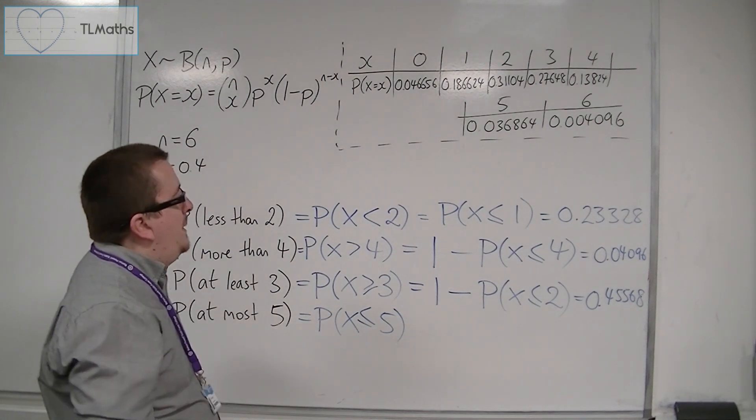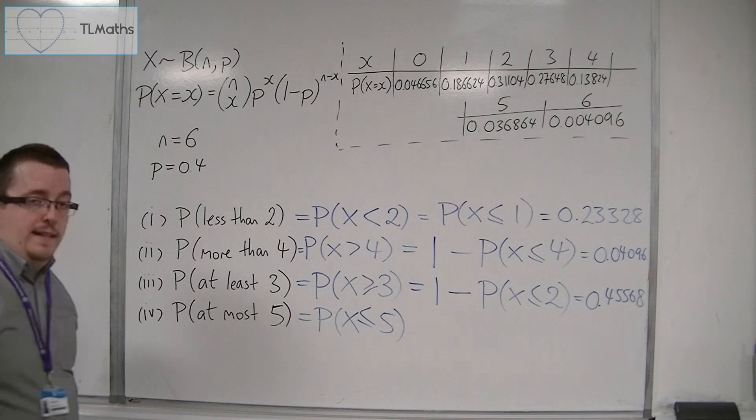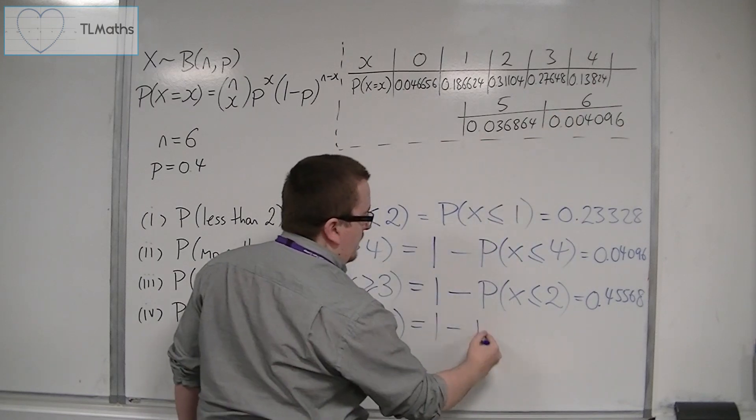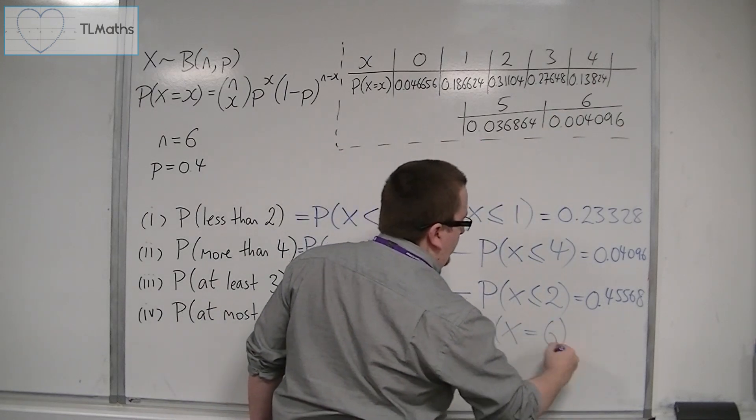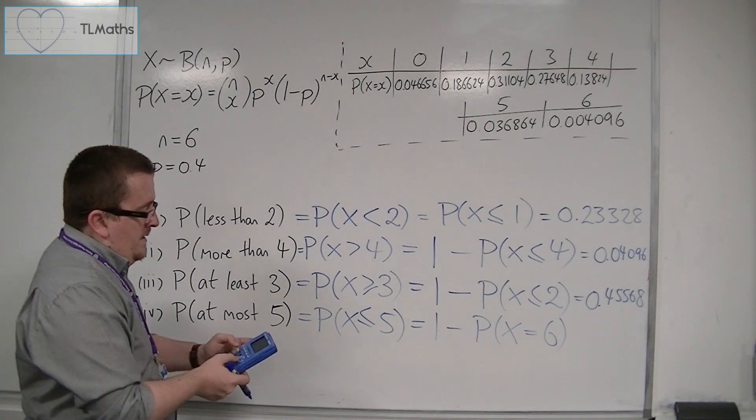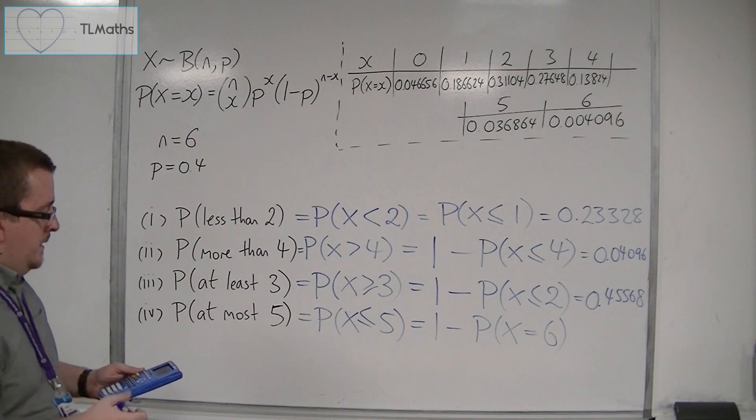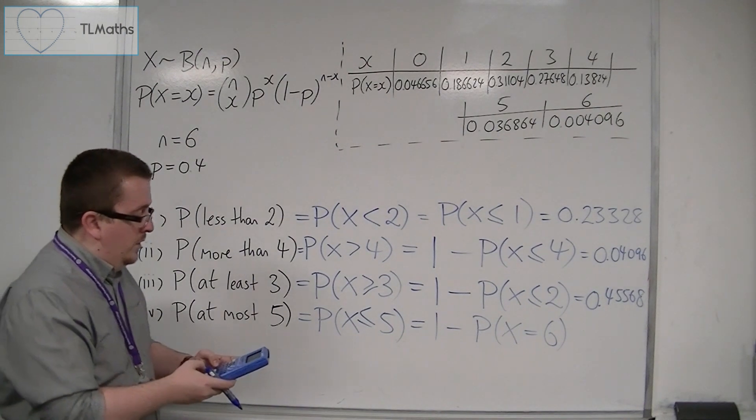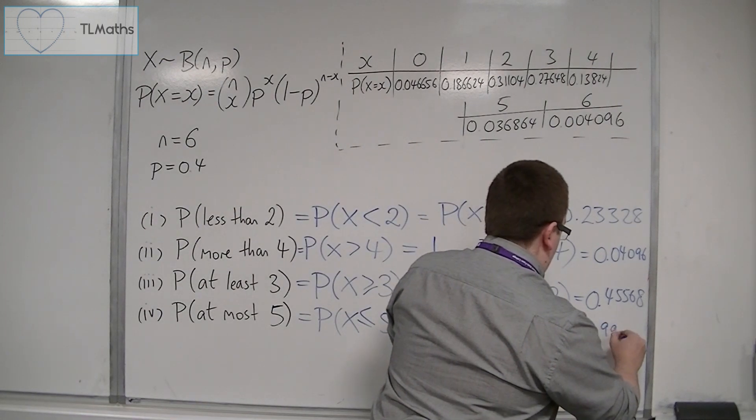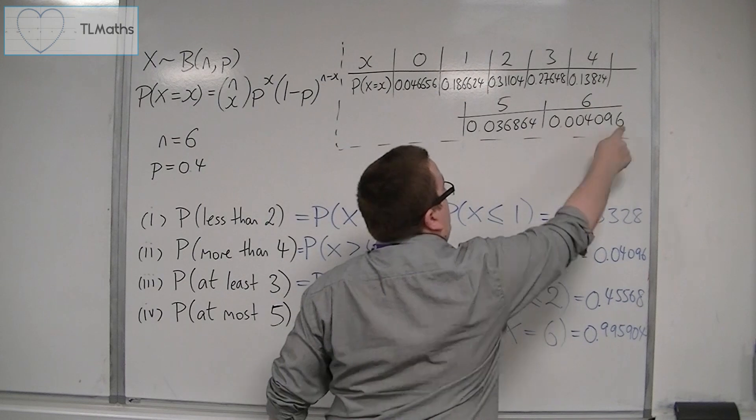So if I want the probability of x being less than or equal to 5, then I want these six probabilities added together. Which is the same as 1 take away the probability of x being less than or equal to 6. So that would be 1 take away, now binom PDF, because I want a specific value, a particular value, 6, 0.4, 6. And that's 0.995904, which is exactly the same as finding 1 take away this number here.